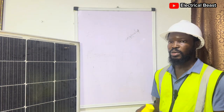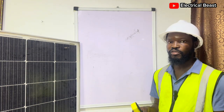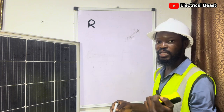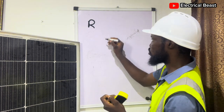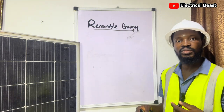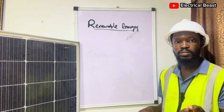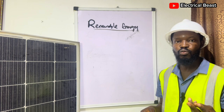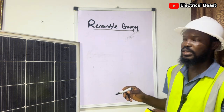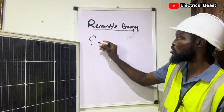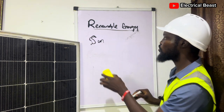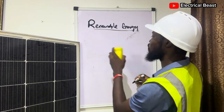First thing we are going to talk about is where does solar energy come from. We talk about renewable energy — we cannot talk about solar energy without talking about renewable energy. Renewable energy is the energy gotten from natural sources, like the sun and the wind. The focus for today's class is the energy gotten from the sun, which is known as solar energy.